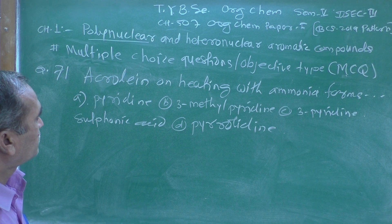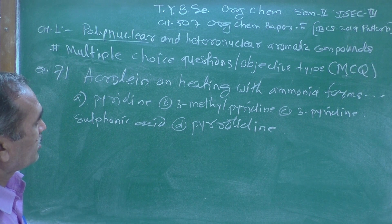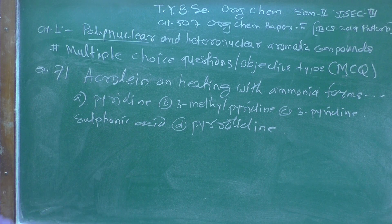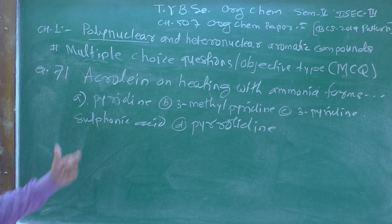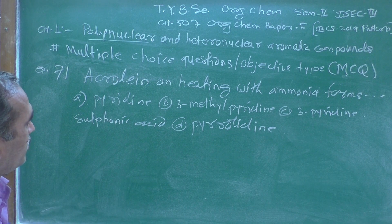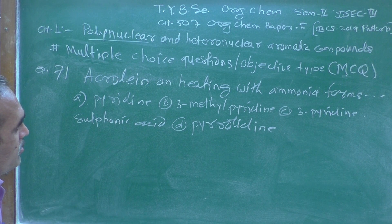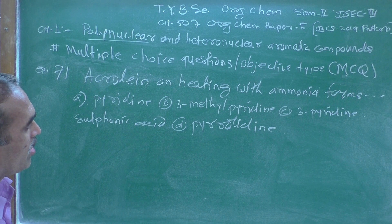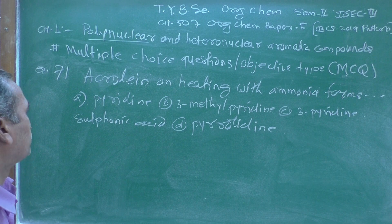Question 71: Acrolein on heating with ammonia forms a blank. The options given are: (A) pyridine, (B) 3-methylpyridine, (C) 3-pyridine sulfonic acid, and (D) pyrrolidine.